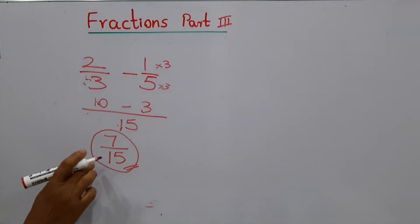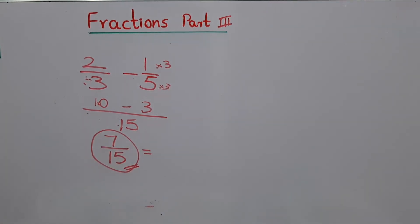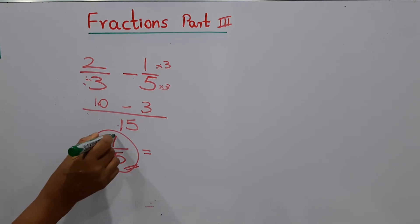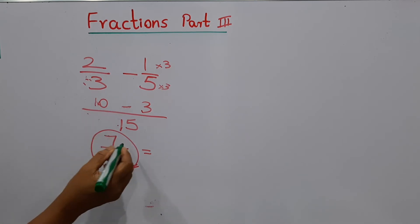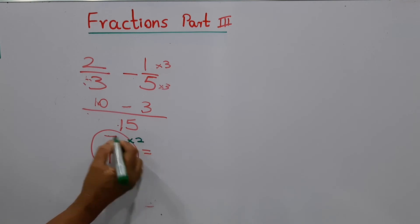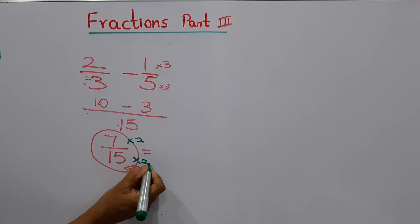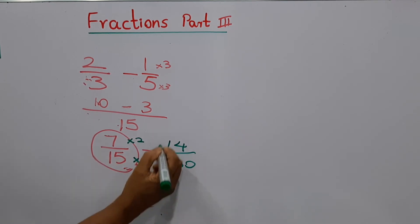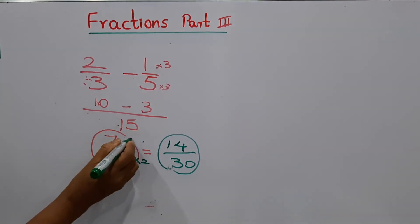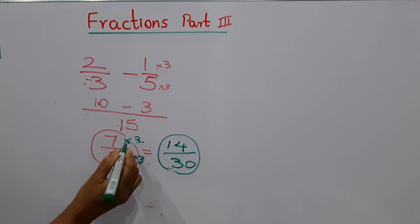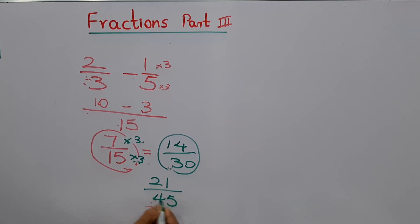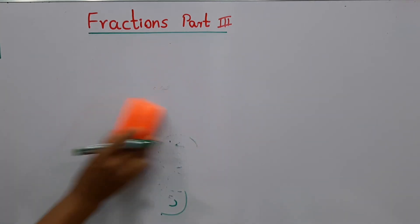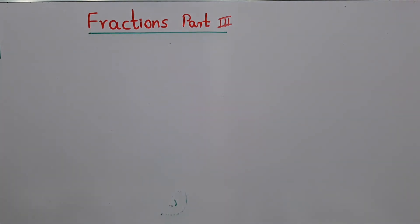The answer is 7/15. Can we write an equivalent fraction to this? There is no number that can divide both 7 and 15, so we multiply instead. Multiply by 2: 2 times 7 is 14, and 2 times 15 is 30 — giving 14/30. Or multiply by 3: 3 times 7 is 21 and 3 times 15 is 45 — giving 21/45. These are equivalent fractions.